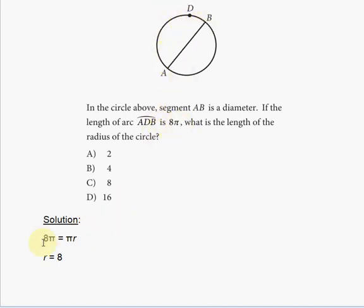And then solve for R. Dividing both sides by π eliminates the π on both sides and just leaves R is equal to 8. And R is the radius, so the answer choice here is C. 8 is the radius of the circle.